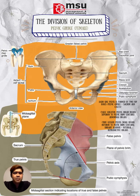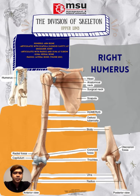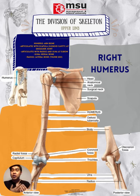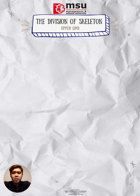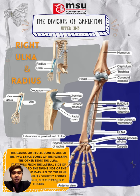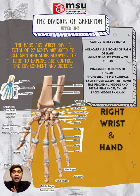The upper limb is divided into three regions: the arm between the shoulder and elbow joints, the forearm between the elbow and wrist, and the hand distal to the wrist. There are 30 bones in each upper limb. The humerus is the single bone of the upper arm. The ulna medially and radius laterally are the paired bones of the forearm. The base of the hand contains eight carpal bones, the palm is formed by five metacarpal bones, and the fingers and thumb contain a total of 14 phalanx bones.